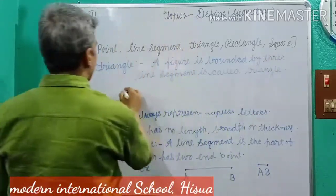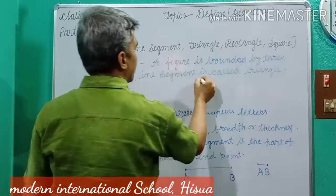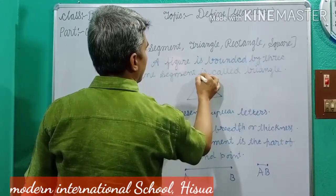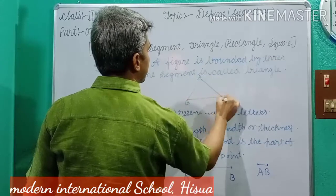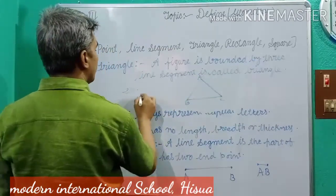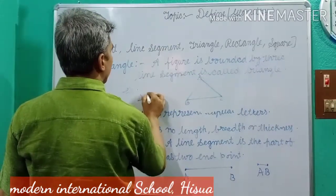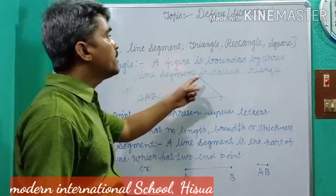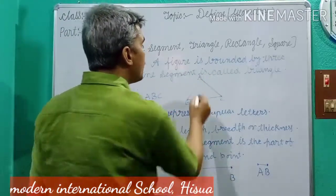For example, A, B, C. So you write here, triangle A, B, C. ABC is a triangle. A figure is bounded by three line segments.